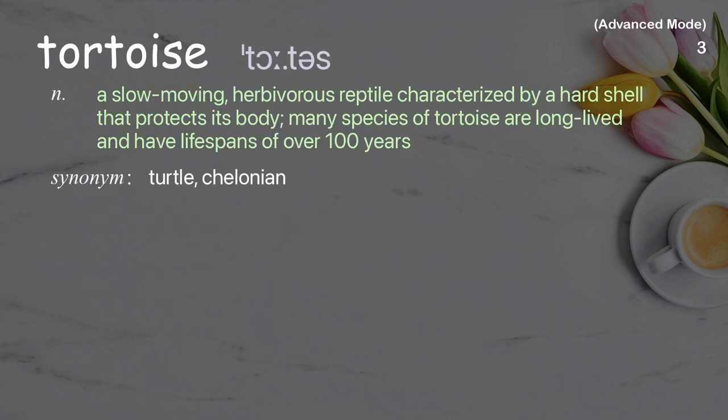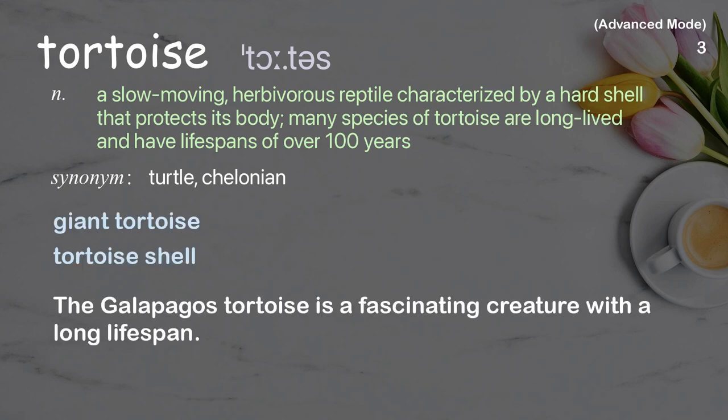Tortoise: a slow-moving herbivorous reptile characterized by a hard shell that protects its body. Many species of tortoise are long-lived and have lifespans of over 100 years. Examples: giant tortoise, tortoise shell. The Galapagos tortoise is a fascinating creature with a long lifespan.